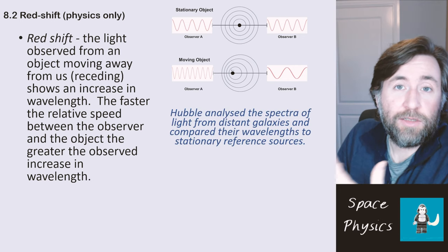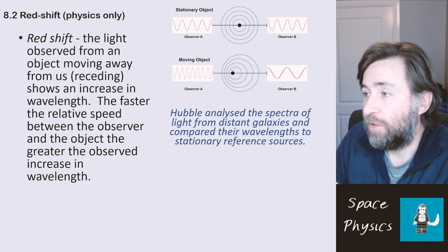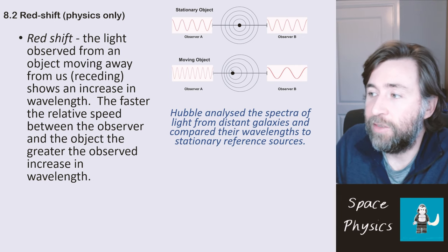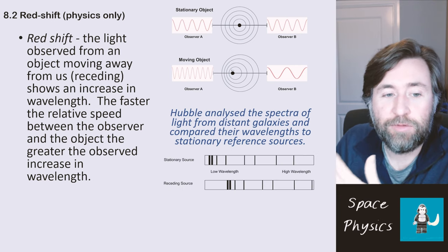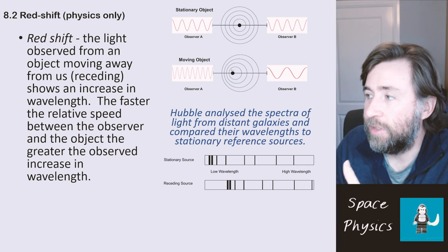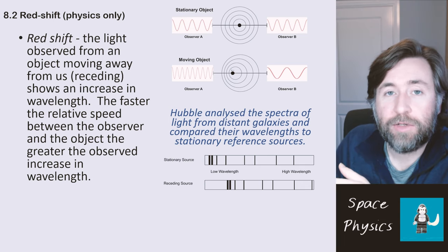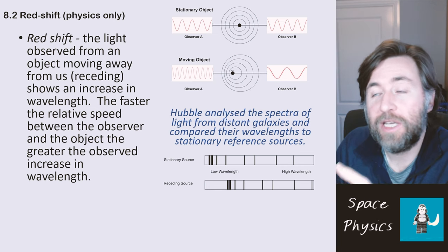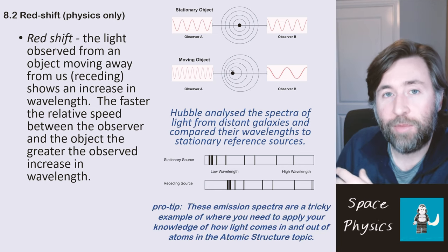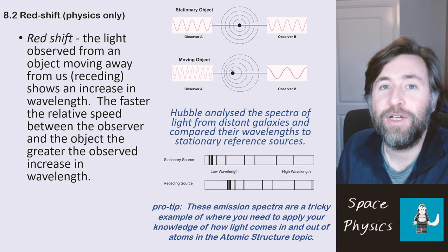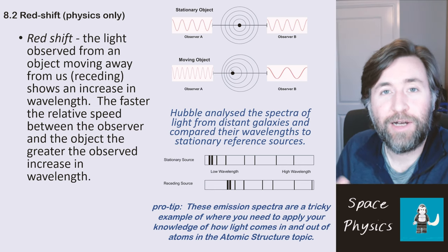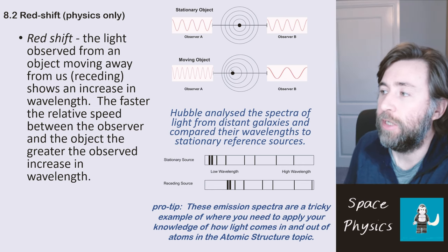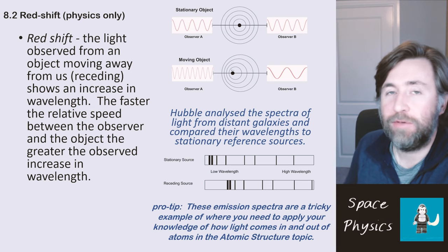So Hubble analyzed the spectrums, the emissions of all of these distant galaxies that he could see. And he compared their wavelength to stationary reference sources. So you might often see it as a diagram like this. So we're actually looking at two emission spectrums here. Now these are emission spectrums from the same element. And you do need to combine this with ideas from your atomic structure where you talk about how light comes in and out of atoms.